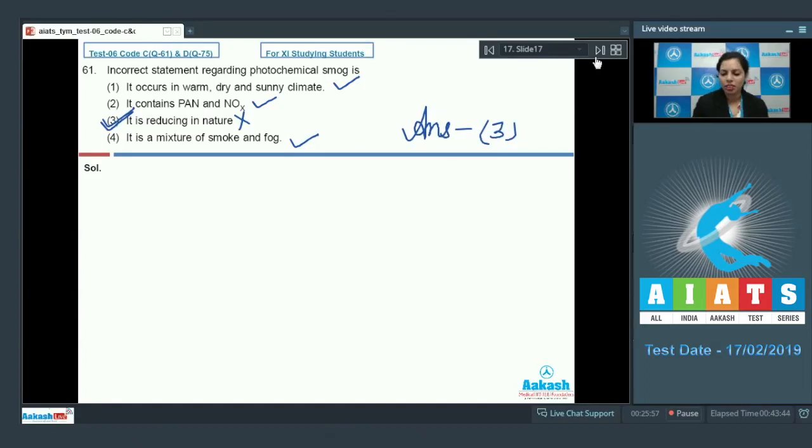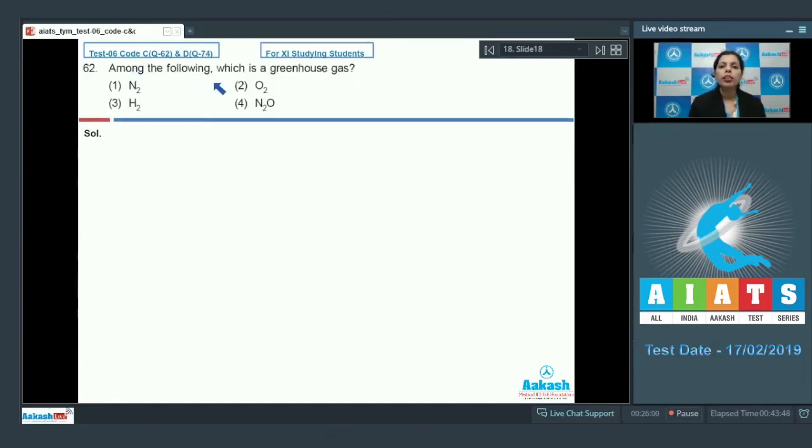Let's take next question. Among the following, which is a greenhouse gas? Greenhouse gases are very well known - they are harming our environment, and these are the reason for global warming. The example of this greenhouse gas is N2O (nitrous oxide). That is the correct answer for this particular question.